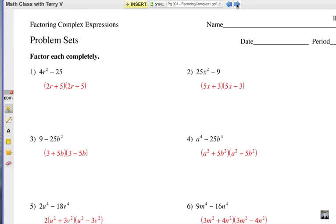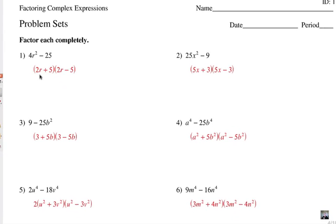Let's check the answers. Number one, what we've got is 4r squared, a perfect square. It's 2r times 2r and 25 is 5 times 5 and as always we have the plus minus pattern because when we use the FOIL method that middle term drops out.